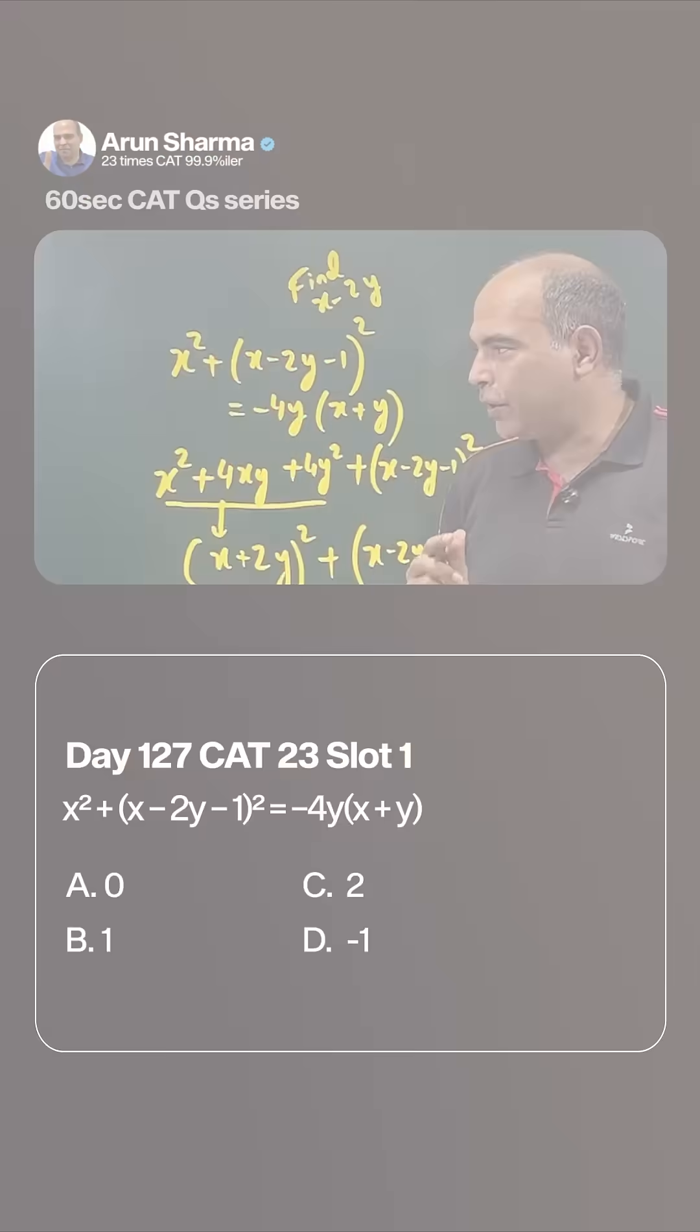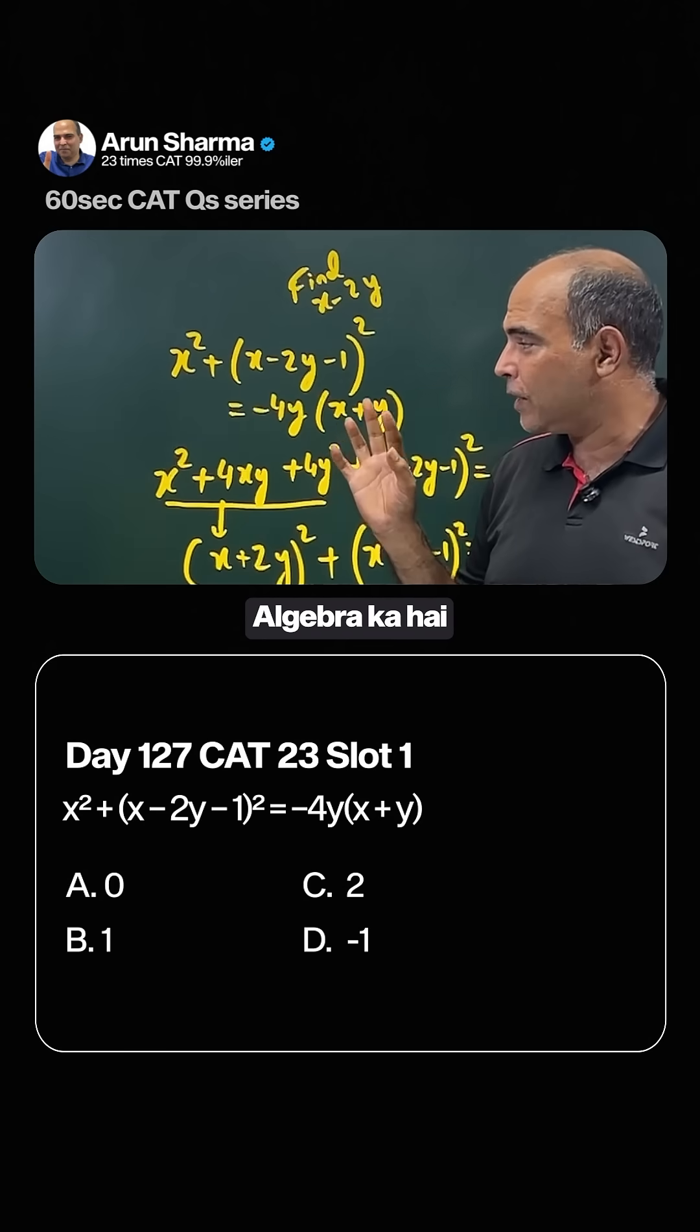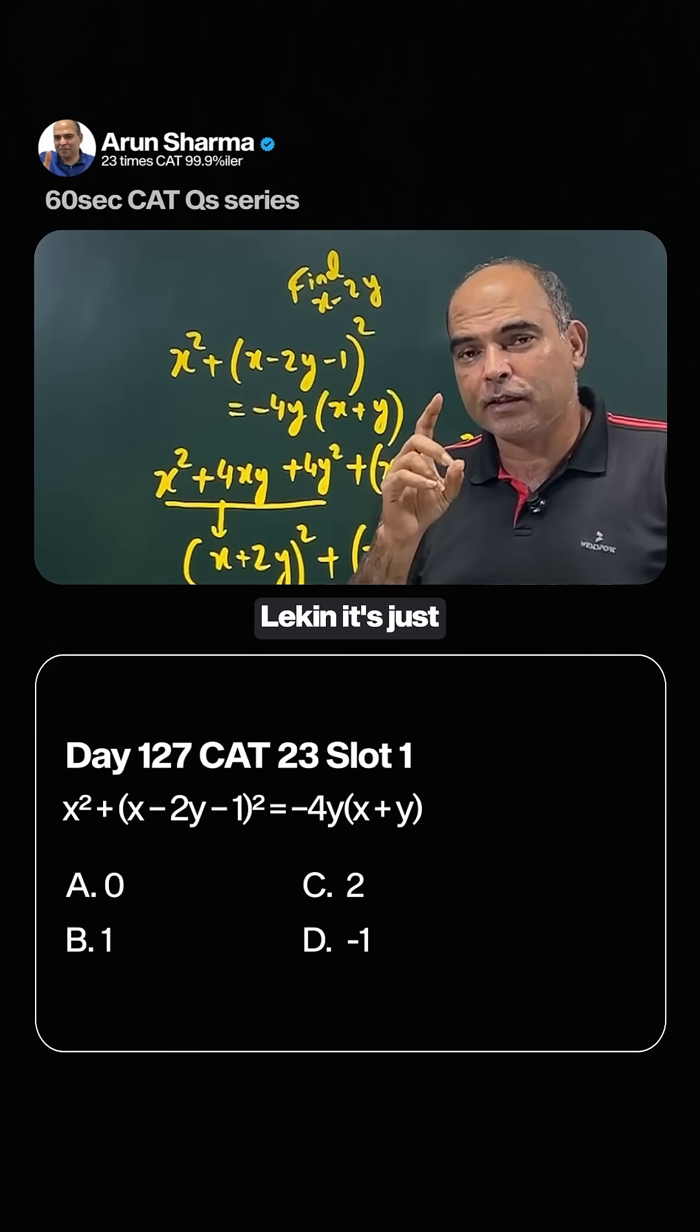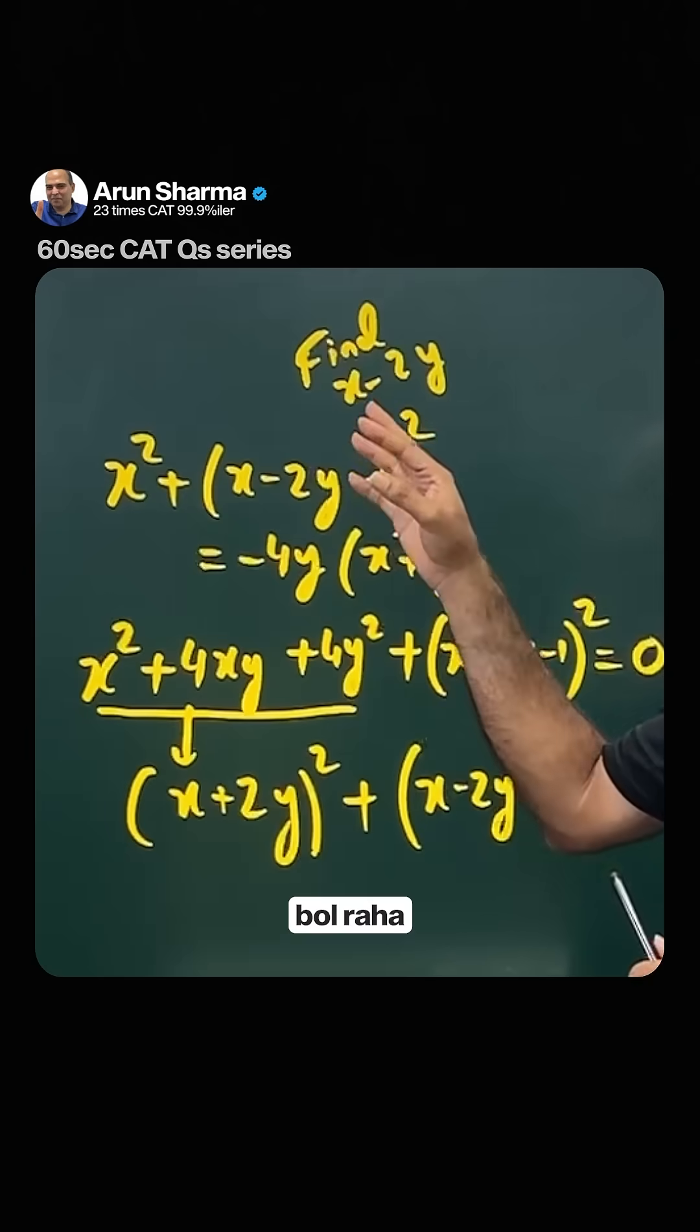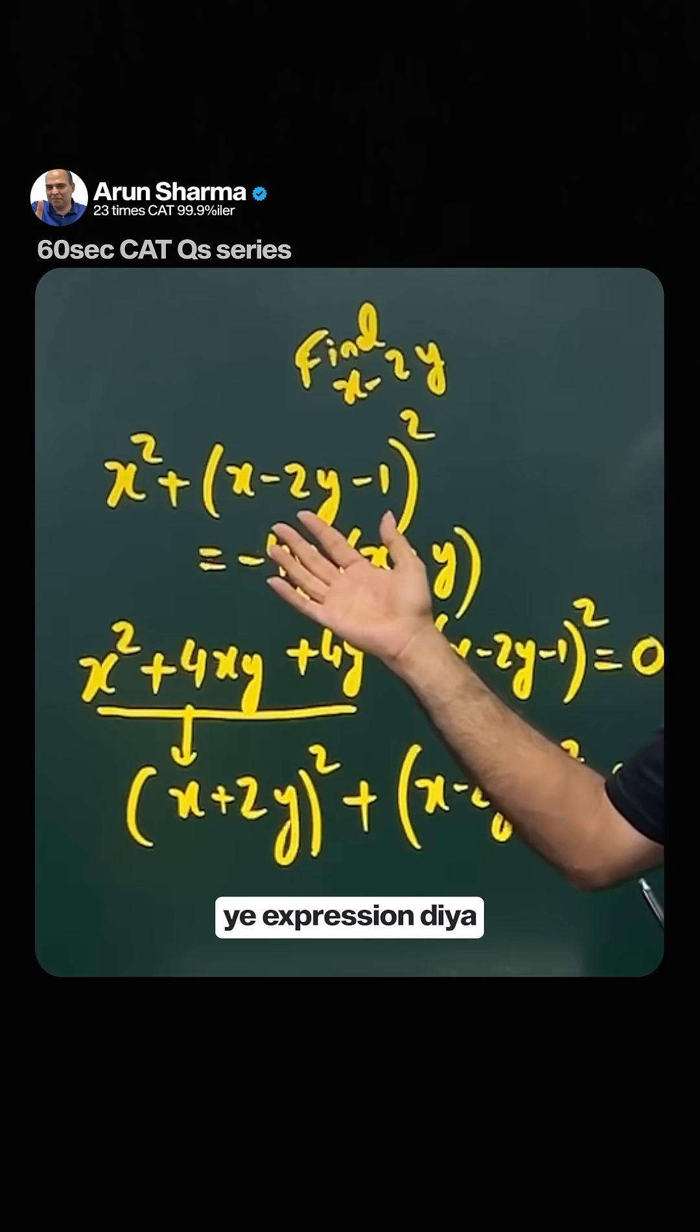Let's solve a CAT question in 60 seconds. This question is in CAT 23 slot 1. The algebra is seemingly very difficult, but it's just a one-step solution. In the question, find x-2y and this expression is given.